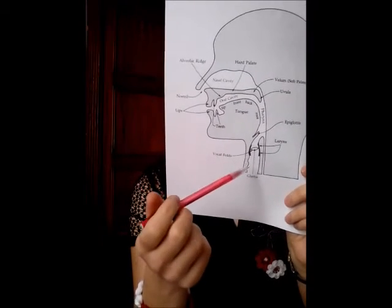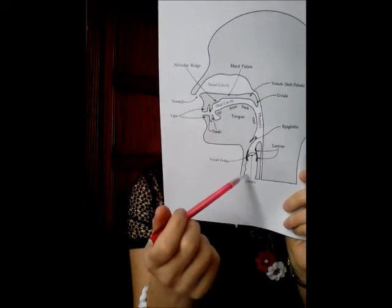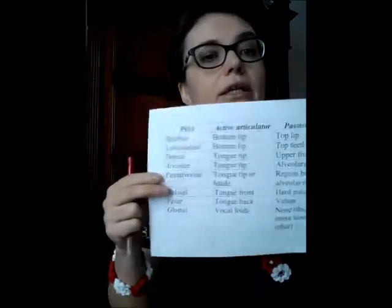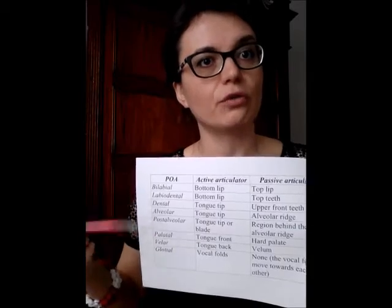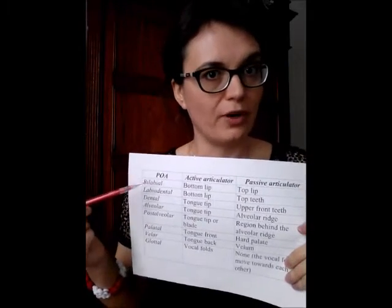We have mentioned already the vocal folds previously. However, we did not mention that the space between the vocal folds is called the glottis. While producing a consonant sound — while creating that block — as a rule two articulators are involved. One is active, which basically means that articulator moves, whereas the other is passive, meaning it doesn't move. The active articulator moves towards the passive articulator. In English we have the following classification of consonant sounds according to the place of articulation.